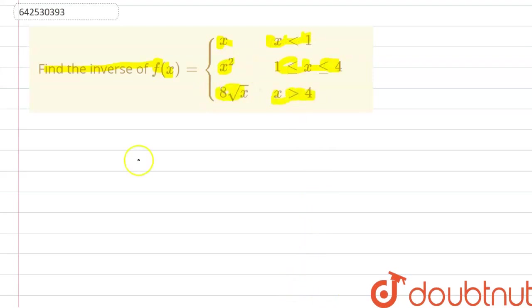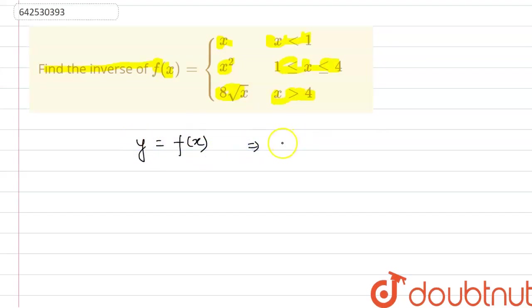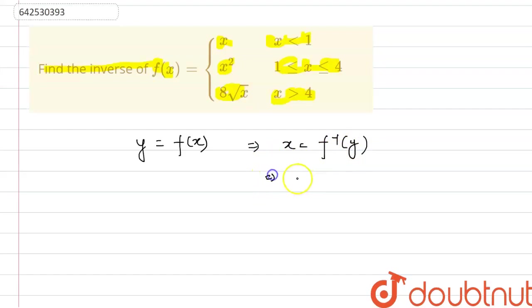Now, how do we find the inverse of a function? We will write down y as equal to f(x), then try to find out the value of x in terms of y. This will give us f inverse of y, and then finally we replace y with x to get f inverse of x.